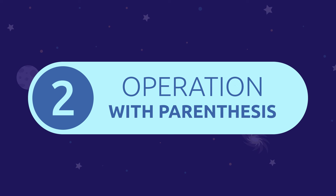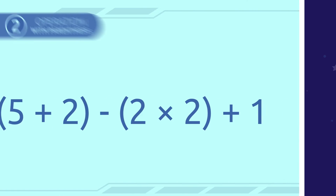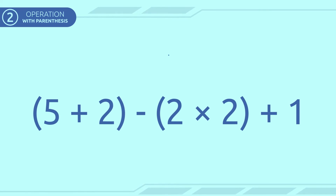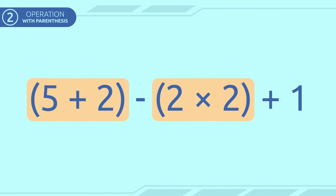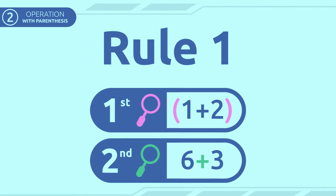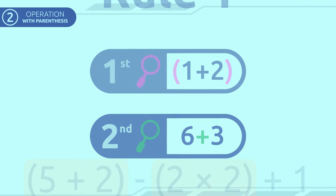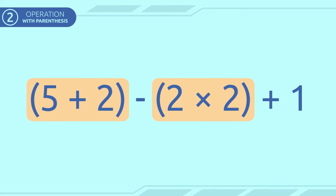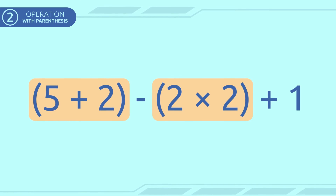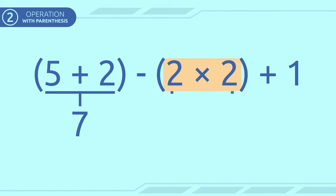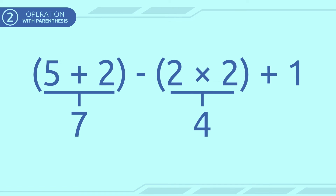Now I will show you an example of an operation with parentheses. What do we have to solve first? Correct! What's inside the parentheses! So we will follow rule number one. We'll start solving the addition and multiplication found inside the parentheses. Five plus two equals seven. And two times two equals four.